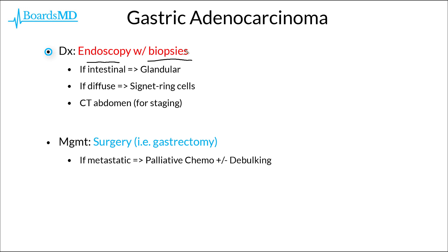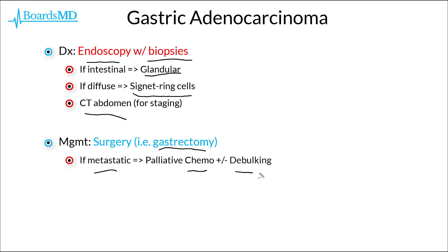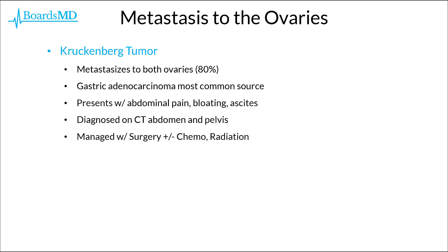The diagnostic test of choice for gastric adenocarcinoma is endoscopy with biopsies. In the intestinal subtype we will see glandular histopathology, whereas in the diffuse type we will see those classic signet ring cells. Once we confirm cancer, we will normally get a CT of the abdomen for staging purposes. We treat patients surgically, generally with a gastrectomy or partial gastrectomy. In metastatic cases, we can also use chemotherapy as well as debulking, though once metastasized it carries a very poor prognosis.